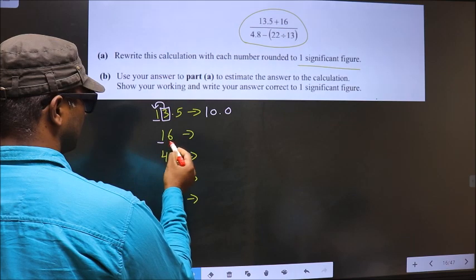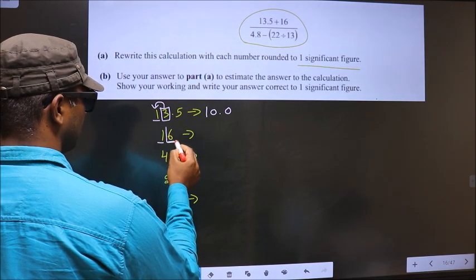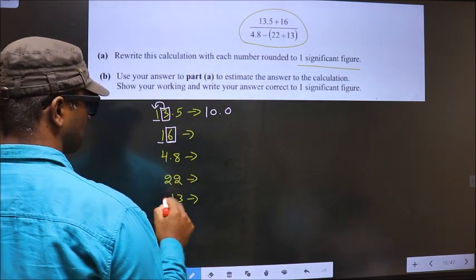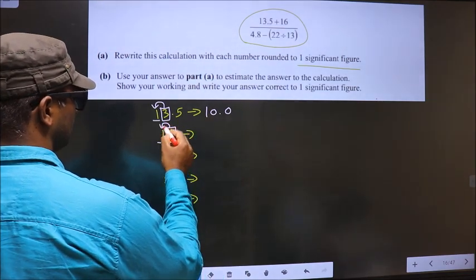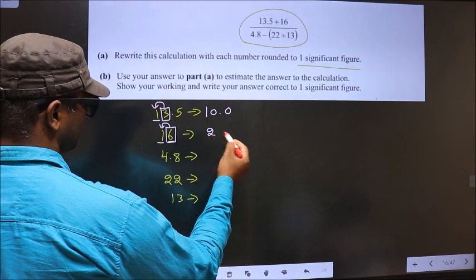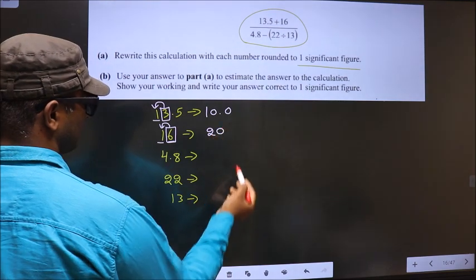Now here, this is the first significant number, this is the second significant number which is 6. Greater than 5. So we should add 1 to this. So it will become 2. And 0 in the rest of the place.